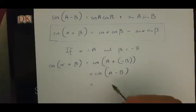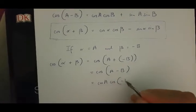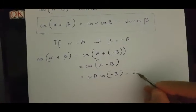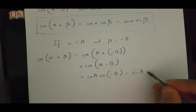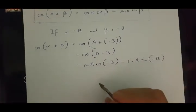this is going to be turned into cos A cos(-B) minus sin A times sin(-B).